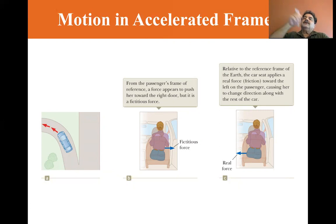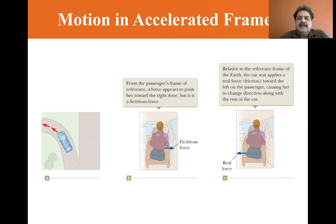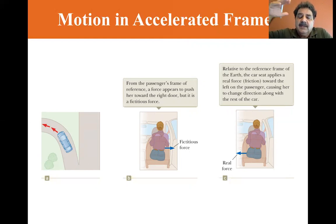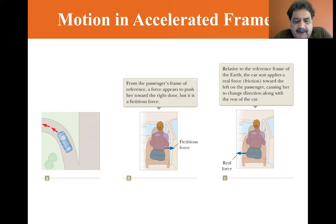If you swing a bucket of water around in a circle, the water stays in the bucket — but really it's just the inertia of the water wanting to keep going in a straight line, and the bucket bottom and walls keep it constrained. They provide the centripetal force that keeps the water in.